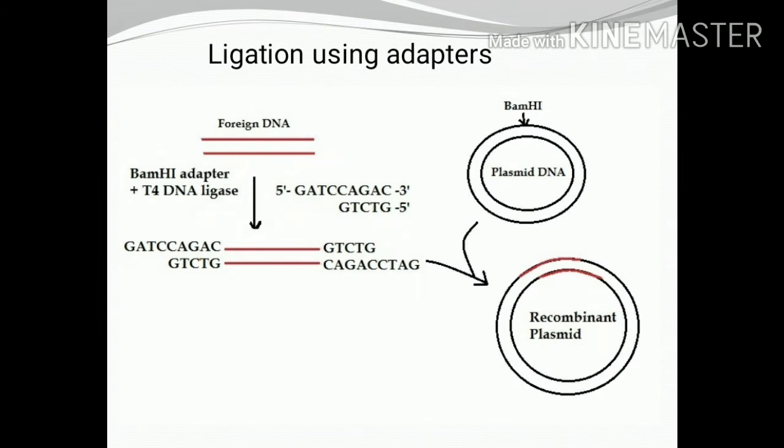In the figure, adapters with GATC overhangs are joined to both ends of the foreign DNA using T4 DNA ligase. The plasmid DNA is cut with the BamHI restriction enzyme, and both are mixed to get the recombinant plasmid.